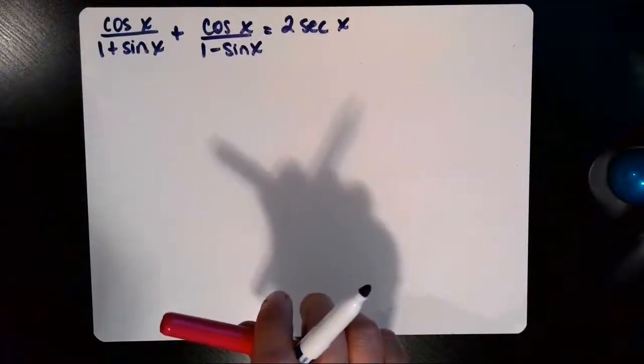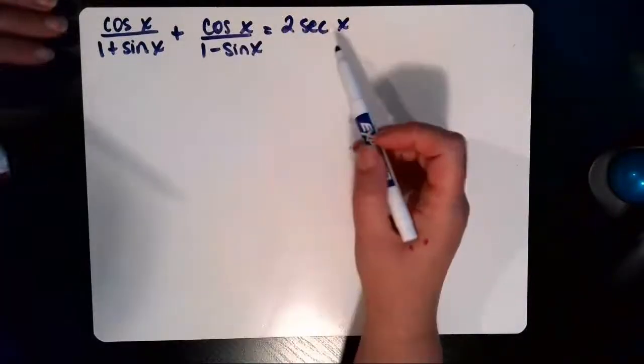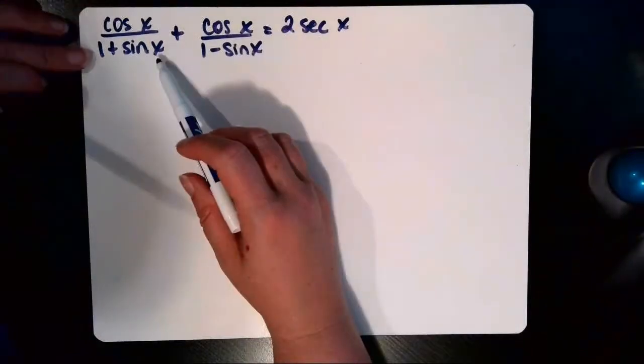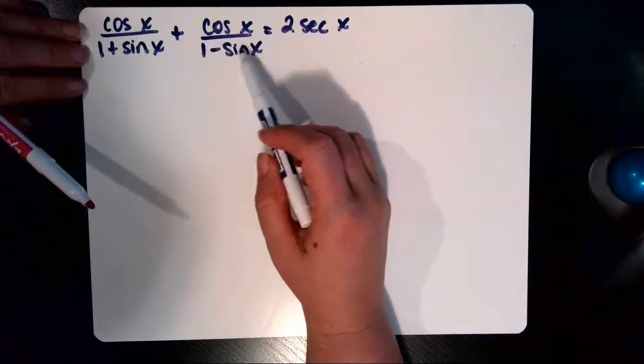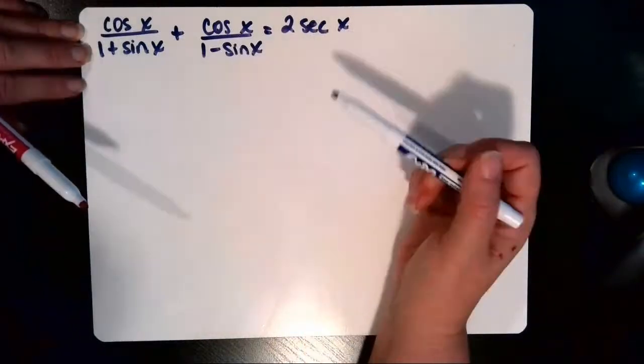In this video, we want to verify the trig identity cosine of x divided by the quantity 1 plus sine of x plus cosine of x divided by the quantity 1 minus sine of x is equal to 2 secant of x.